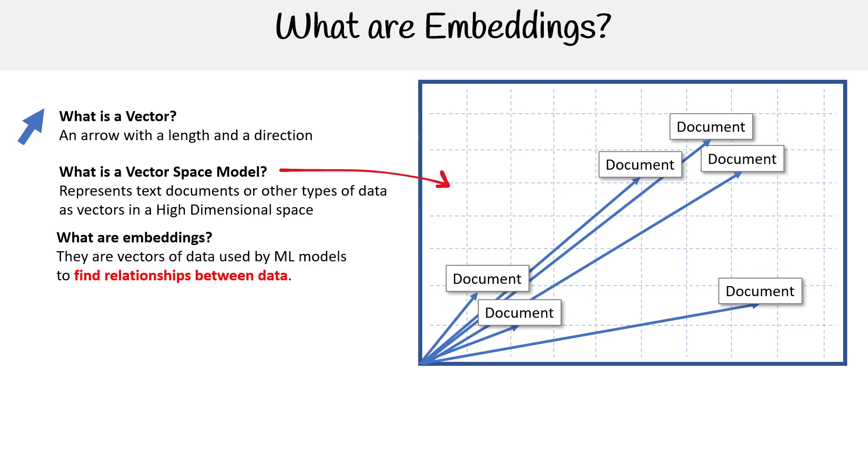So what are embeddings? These are vectors of data used by ML models to find relationships between data. And you'll find that often you're going to be using a machine learning model to create embeddings, and there are specialized machine learning models just for embedding.